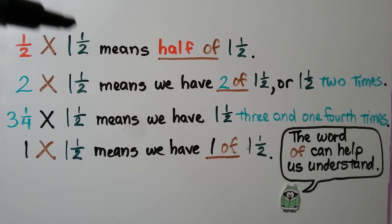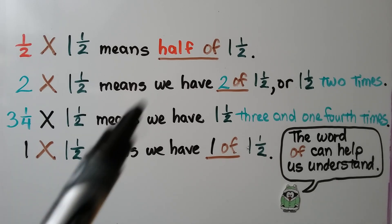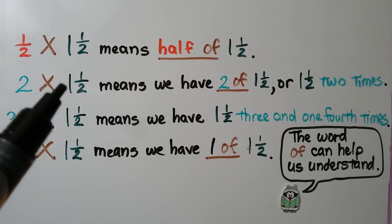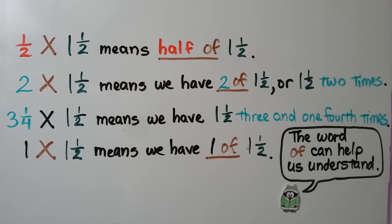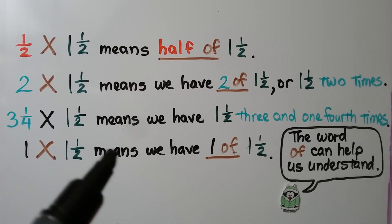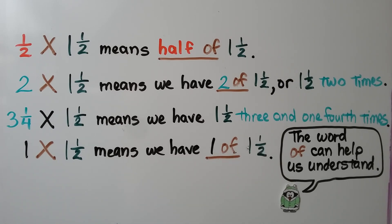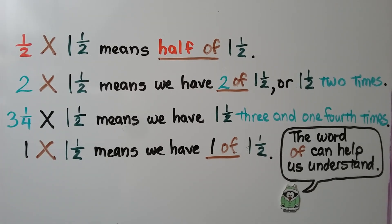When we see 1 half times 1 and a half, it means half of 1 and a half. This 1 half times means 'half of.' We have 2 times 1 and a half, meaning we have 2 of 1 and a half — or 1 and a half 2 times. If we see 3 and 1 fourth times 1 and a half, it means 3 and 1 fourth of 1 and a half. The word 'of' helps us understand word problems: if it says 'half of something,' it's 1 half times something; if it says '3 fourths of something,' it means 3 fourths times something.